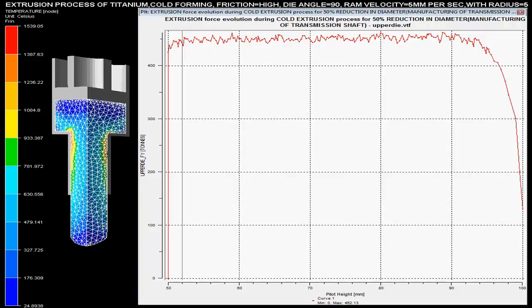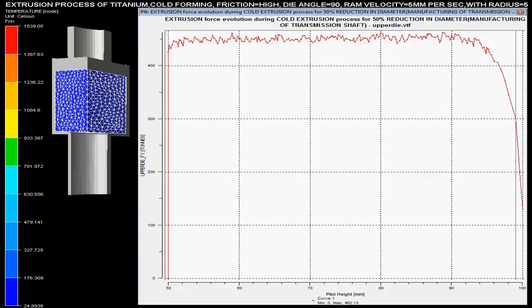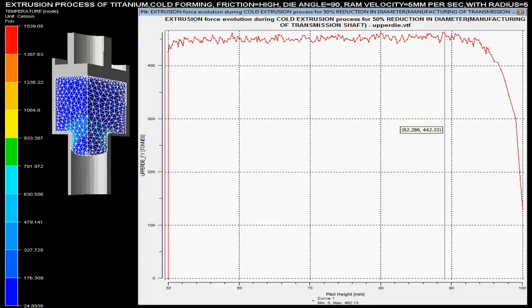These forces are maximum when there is sudden change in the area of the cross section of the billet. As the pilot height reduces, the force required for the extrusion of the pipe is increased.